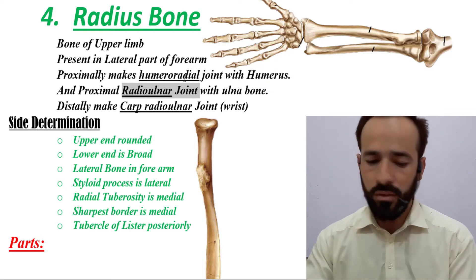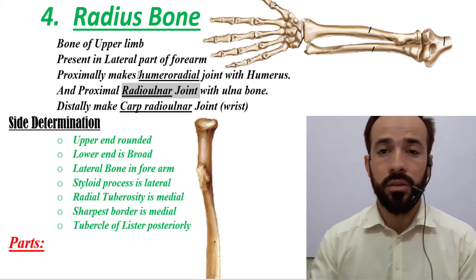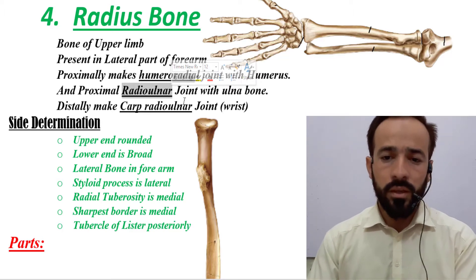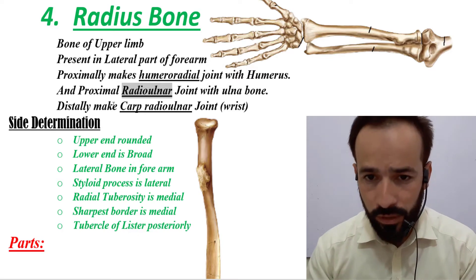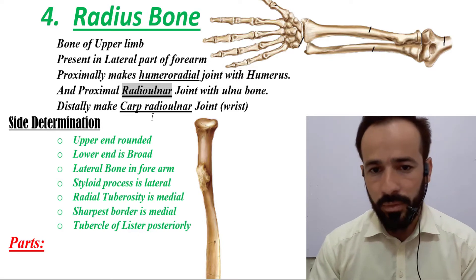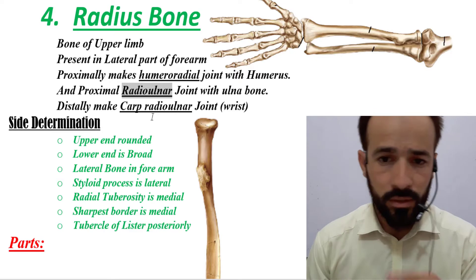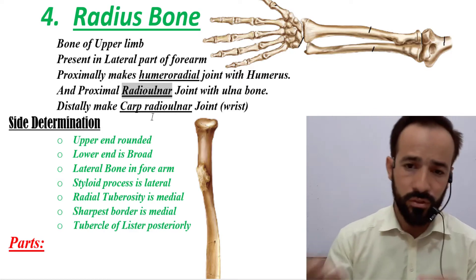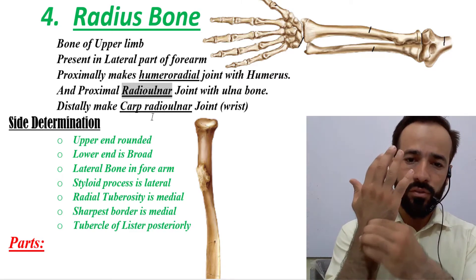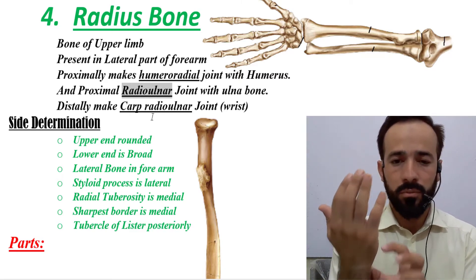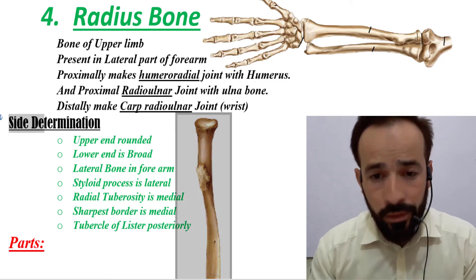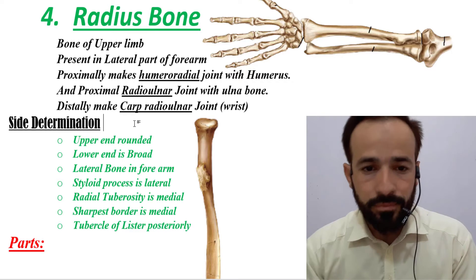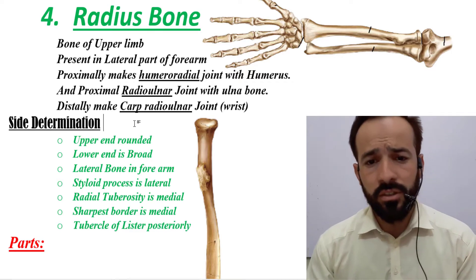In the lower end there is also the distal radioulnar joint. Distally, the radius makes the radiocarpal joint — also called the wrist joint — with the carpal bones and the ulna. So proximally it forms the humeroradial joint and the proximal radioulnar joint, and distally the wrist joint.